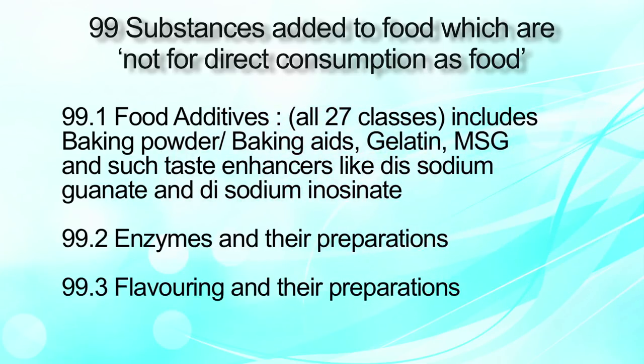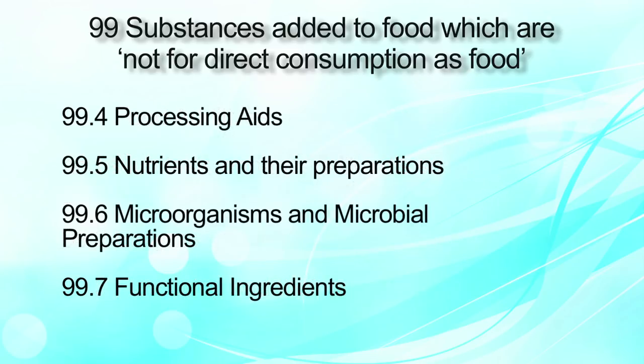To make it more clear: category 99.1 covers food additives. Category 99.2 covers enzymes — various enzymes are allowed in refining oils and fats. Category 99.3 covers flavoring and their preparation — many flavoring agents are allowed in food items including jam, jellies, confectionery. Category 99.5 covers nutrients and their preparation. Category 99.6 covers microorganisms and microbiological preparations. Category 99.7 covers functional ingredients which may include omega-3, omega-6, lycopene and many other functional ingredients.